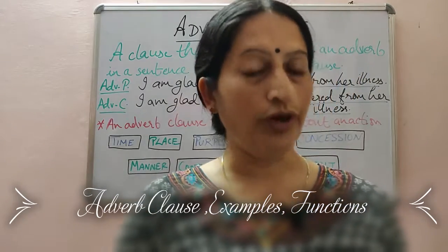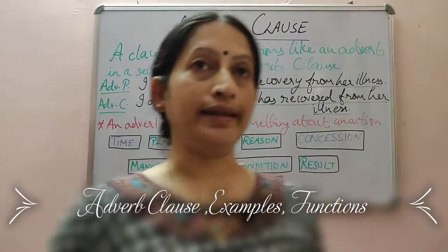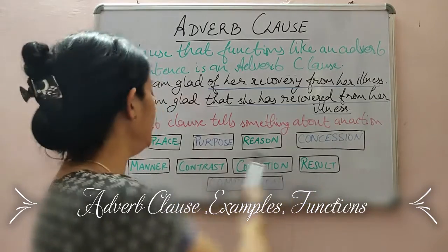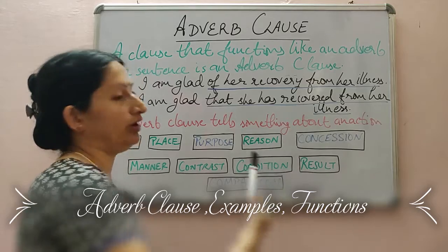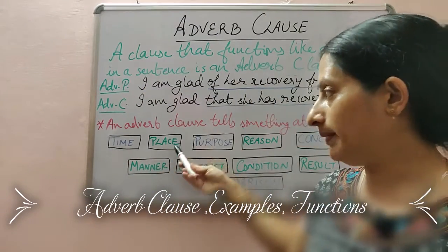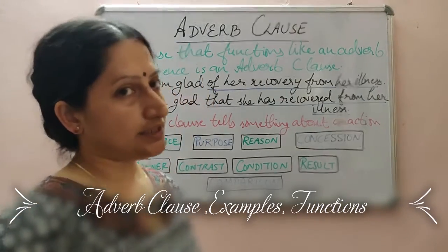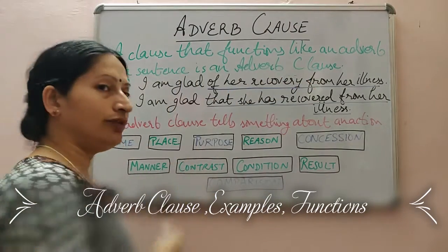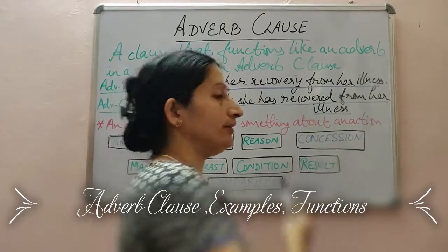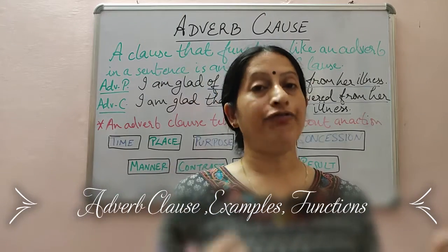Now, the main functions of an adverb clause: an adverb clause has several functions in a sentence. It can tell you about time, place, purpose, reason, concession, manner, contrast, condition, result, or comparison. So it can tell you at what time the action took place, which place it took place, what was the purpose or reason behind the action, what concession was given, the manner in which the action was done, contrast with another action, conditions under which the action took place, the result of the action, or comparison of that action with another.